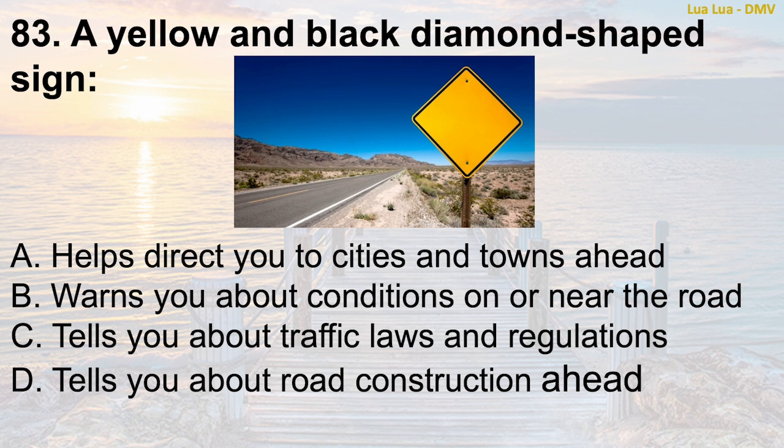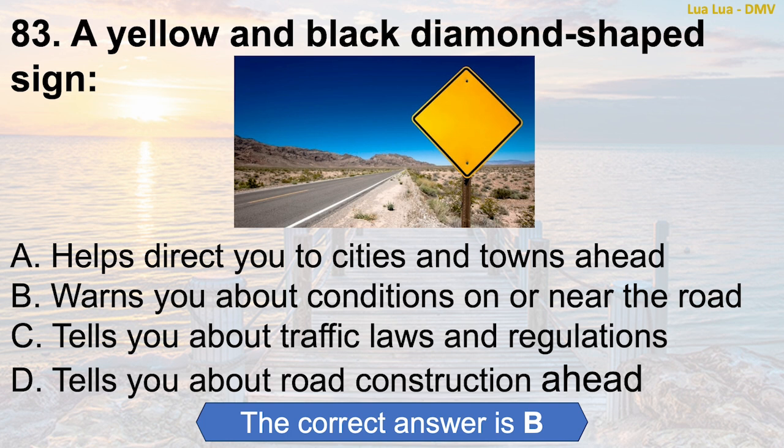Question 83: A yellow and black diamond-shaped sign — A. Helps direct you to cities and towns ahead. B. Warns you about conditions on or near the road. C. Tells you about traffic laws and regulations. D. Tells you about road construction ahead. The correct answer is B: Warns you about conditions on or near the road.